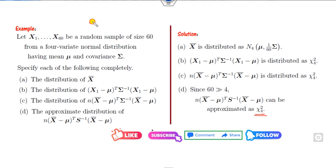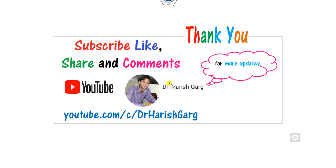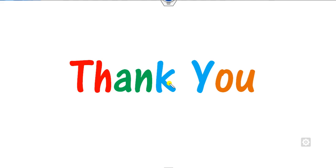Such questions will definitely appear in CSIR NET, GATE Mathematics, and Statistics examinations. You must remember this — it is the simplest way to learn about this result. I hope you liked the video. In the next lecture, we will find the unbiased estimator of the covariance matrix. Till then, like, comment, and share this video with your friends. Best of luck, students!